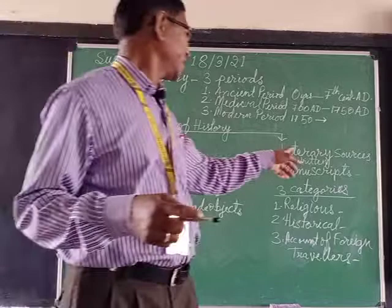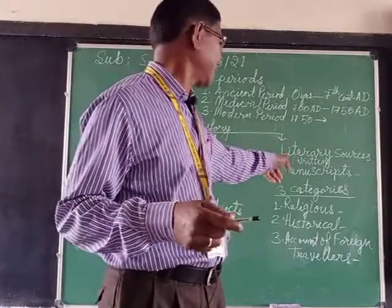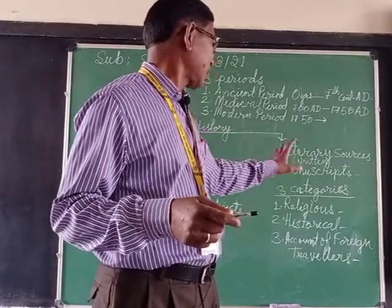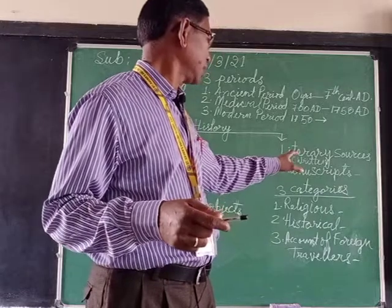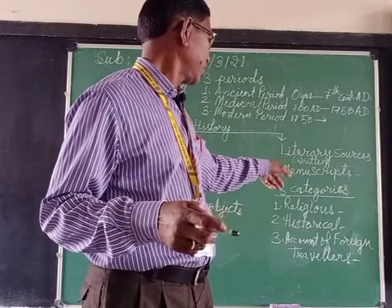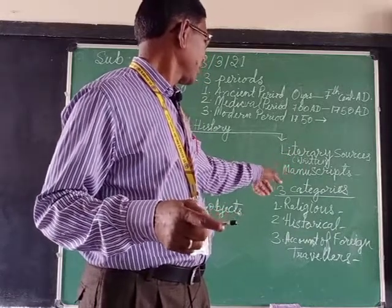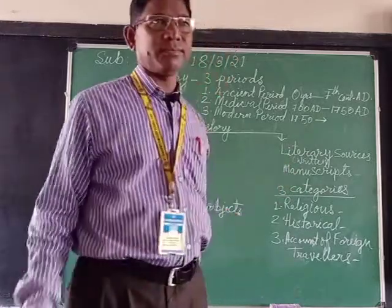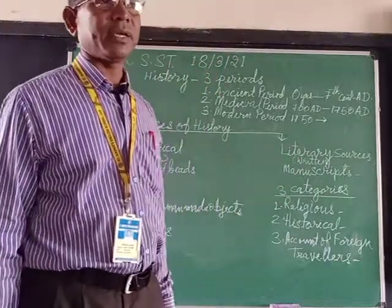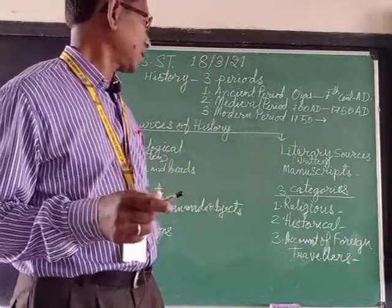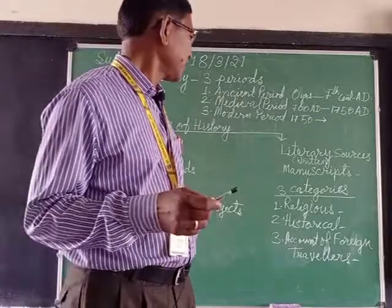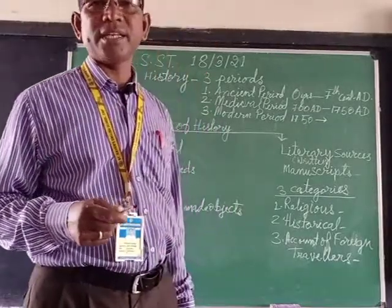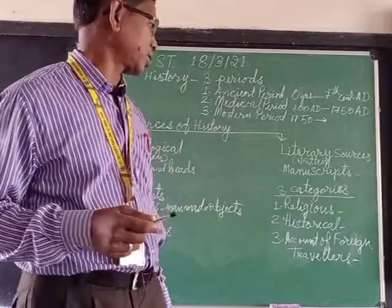The next is literary sources. These are written records that can still be found and read today. One type is manuscripts — manuscripts are written by hand, and handwritten records are called manuscripts.